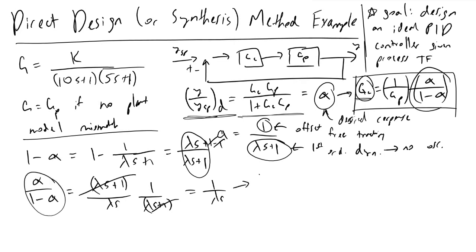And so now when we write out what our controller should be, we will find that it is equal to the inverse of g, which would be 10s plus 1 times 5s plus 1, quantity divided by k, and then times 1 over lambda s.